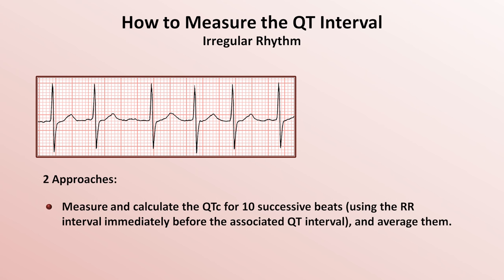Moving on to electrolyte disorders. Hypokalemia, hypomagnesemia, and hypocalcemia are all reported to be associated with long QT syndrome and torsade. However, the precise nature of the association with hypokalemia is unclear. Possible explanations include that hypokalemia truly prolongs the QT interval, that hypokalemia increases the risk of torsade when the QT interval has been increased from another cause such as medications, or that hypokalemia's induction of prominent U waves makes the QT interval artificially seem long — or it may be a combination of all three.